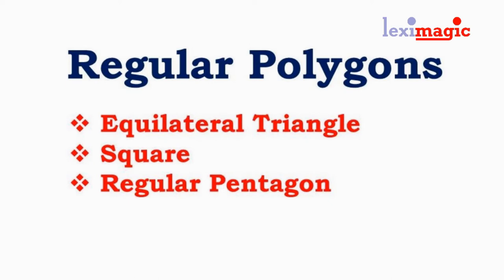A regular triangle is an equilateral triangle. A regular quadrilateral is a square. Then we have a regular pentagon, hexagon, etc.